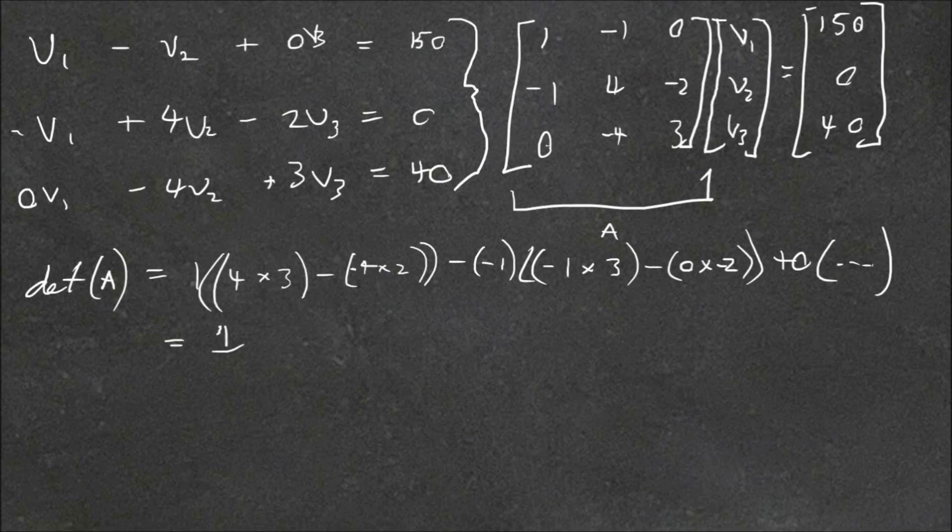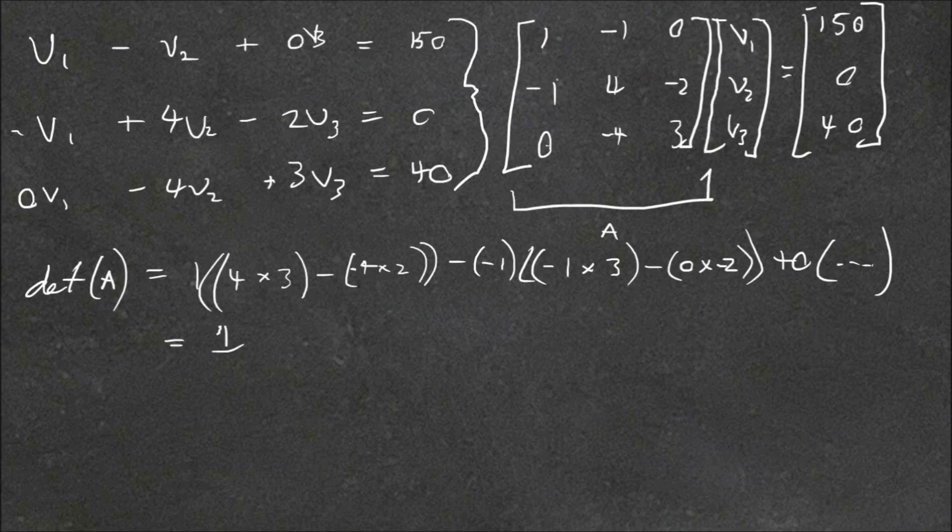So to find our V1, V2 and V3 value, we need to replace the 1st, 2nd and 3rd column by the solution to the matrix. So I'll show you what I mean. So V1 equals our column matrix solution here, which is 150, 0, 4. And then the rest of the matrix here. So from the 2nd and 3rd column, we've got minus 1, 4, minus 4, 0, minus 2, 3. And we divide this by our determinant. So that's divided by 1. So it doesn't mean much in this case. But if your determinant wasn't 1, it's a bit more important.